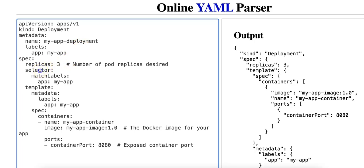Next we have selector, which defines how the deployment finds the pods it manages — in this case it looks for pods with the label app: my-app. The template section defines how to create pods when the deployment creates them, and it has its own metadata and spec. The metadata within the template contains labels that are assigned to the pods created by this deployment, so the label will be app: my-app.